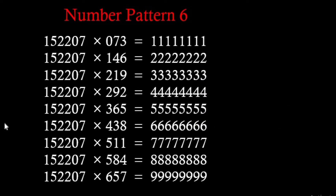The number pattern is based on the number 152207. Every row starts with this particular number 152207. The second number in every row is a multiple of 73: in the first row we can see 73, second row 146, third row 219, fourth row 292, fifth row 365.